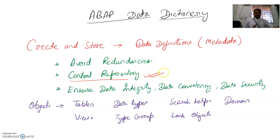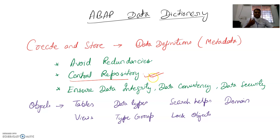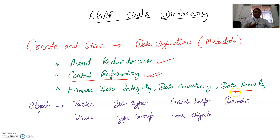Another advantage is avoiding data redundancy. Instead of writing a student's name ten times for ten different marks entries, you write the name once with all marks in a single row — the name is not repeated for different purposes. Data security is also important: not all data should be shared with everyone. You can restrict certain columns so only required data is shared with other departments.